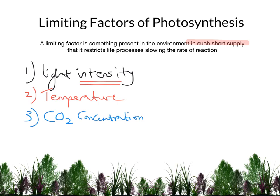You might think — my students often say — what about water? Water is needed by the plants, and that is true: water is needed in photosynthesis. But it's not classed as one of the core limiting factors. We're looking at light intensity, temperature, and carbon dioxide concentration. And what you want to do, in a nutshell, is basically maximise all of these. That's the core thing you're aiming for.